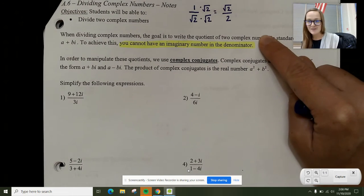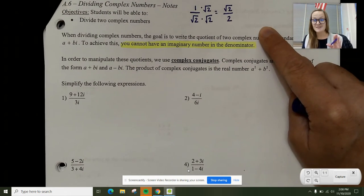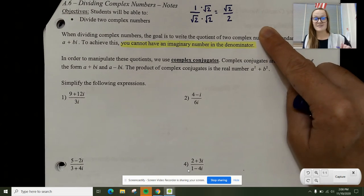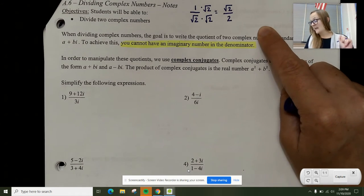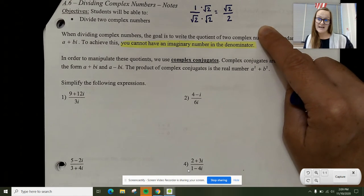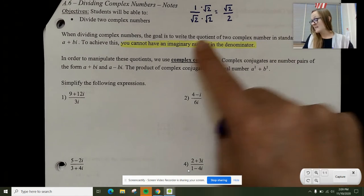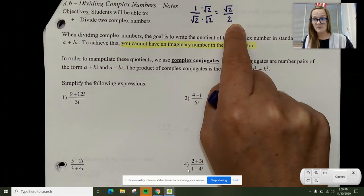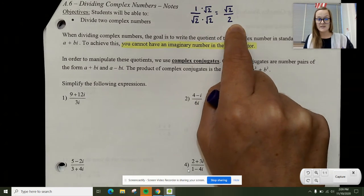If this doesn't ring a bell with you, that's okay. This was something that was done in geometry. If it doesn't ring a bell with you, it's totally fine. If it does, it can help you to understand what we're doing today. Notice I've gotten rid of the radical on the bottom, and now I just have a number on the bottom. That's what I'm trying to do today.